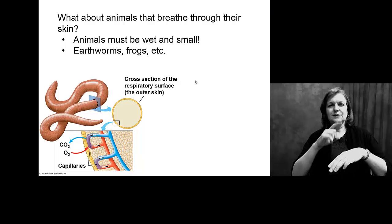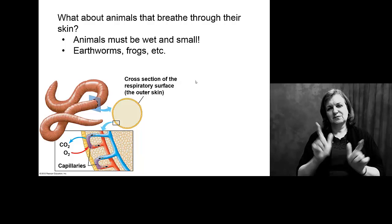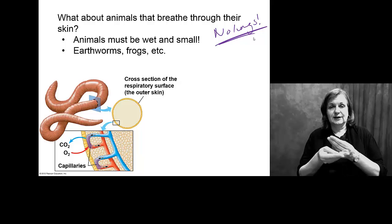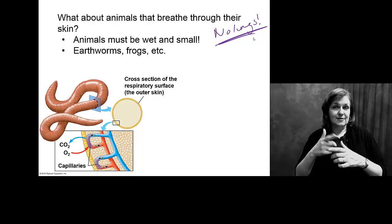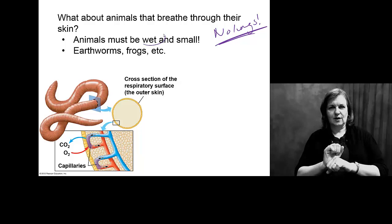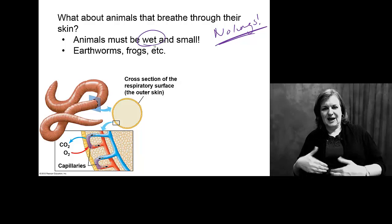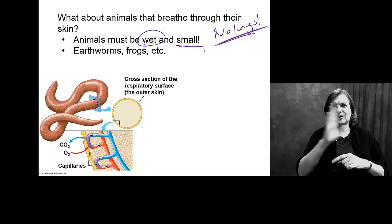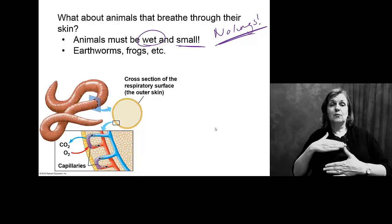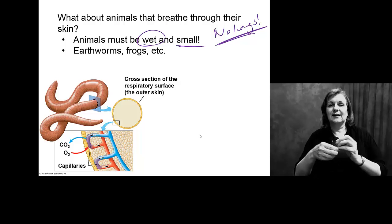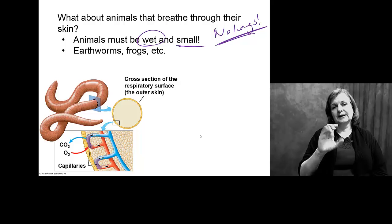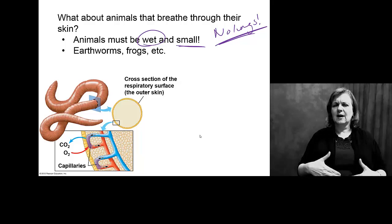What if you're an earthworm? There are many organisms that don't have any lungs. They simply exchange, by diffusion, carbon dioxide and oxygen across their skin surfaces. It works just fine for them — they're small organisms, but they must be wet or at least moist most of the time. If we're looking at exchanging oxygen and carbon dioxide just across the skin surface, if you were a large organism like you are, this would never work. You would never get the carbon dioxide out of the middle of yourself and you would never get oxygen to the middle of yourself.